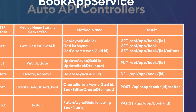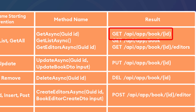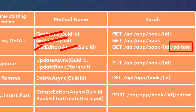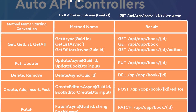Let's take a look at some examples with the BookAppService. The result for the GetAsync method with an id parameter will have Book as the controller name and only the id — the GetAsync part is trimmed out. Same goes with GetListAsync; the whole thing is trimmed and we're left with just the controller name, book. For GetEditorsAsync with an id parameter, we're left with just editors. GetEditorGroupAsync with an id parameter gives us editor-group in kebab case, followed by the id. The same idea applies for the rest.